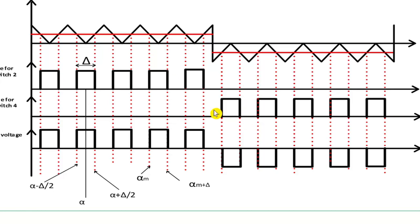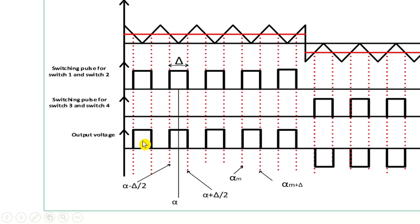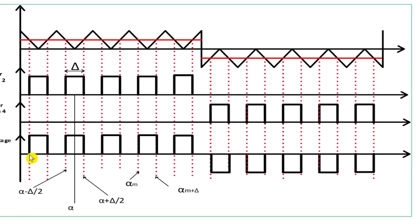These switching pulses can be fed to a single-phase inverter — pulses are fed to switches 1 and 2, and these are fed to switches 3 and 4. Because of that, these output pulses are obtained, where the output voltage equals the input voltage Vs. If you want to increase the number of pulses, increase the frequency of the carrier signal. If you want to increase the frequency of the output voltage, increase the frequency of the reference signal.